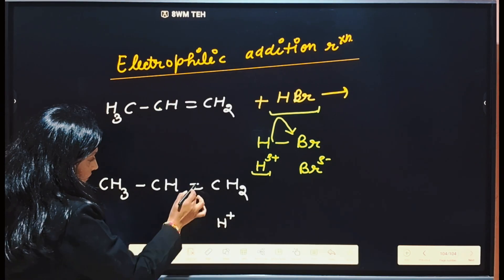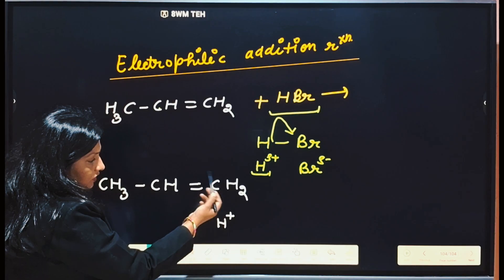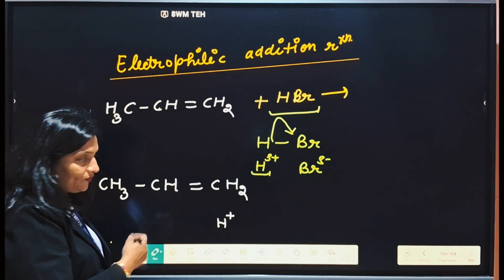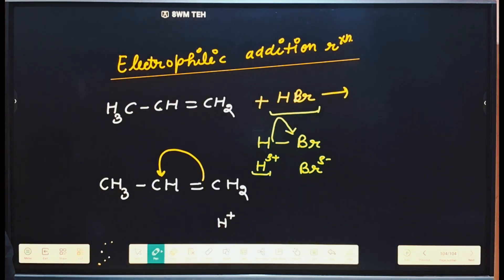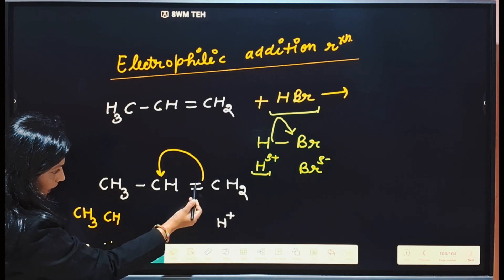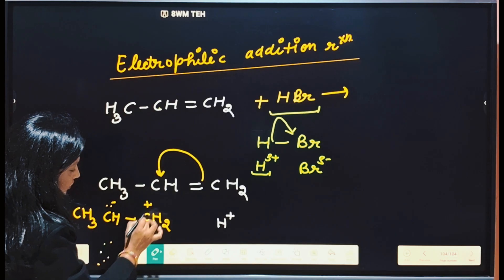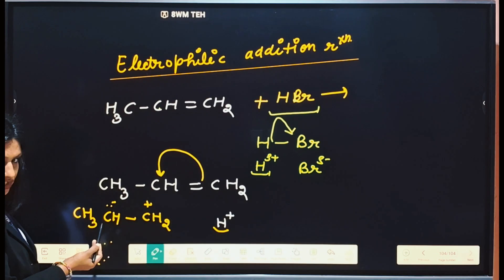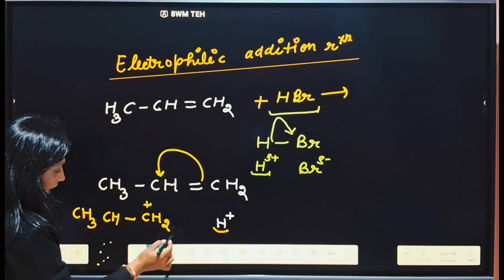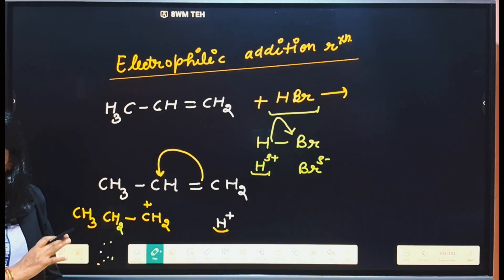In the presence of H positive, shifting of the pi electrons will take place. Both carbons can accept the electrons. If shifting takes place to one carbon — CH3-CH-CH2 — the electrons shift to one carbon giving it a negative charge, and the other carbon CH2 becomes positive. Then H positive attaches where the negative charge is. So we get CH3-CH2-CH2 positive as one possibility.